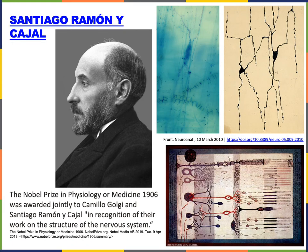Interstitial cells of Cajal are named after the famous neuroanatomist Santiago Ramón y Cajal, who discovered them. Cajal, along with another neuroanatomist Camilo Golgi, received the Nobel Prize in Physiology or Medicine in 1906 for their work, where they were essentially the first neuroanatomists to make detailed drawings of the structure of the nervous system.